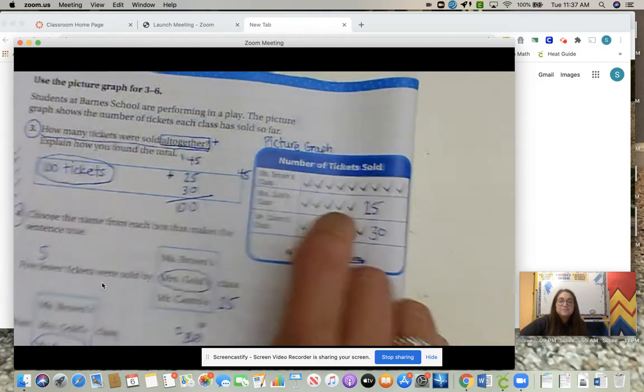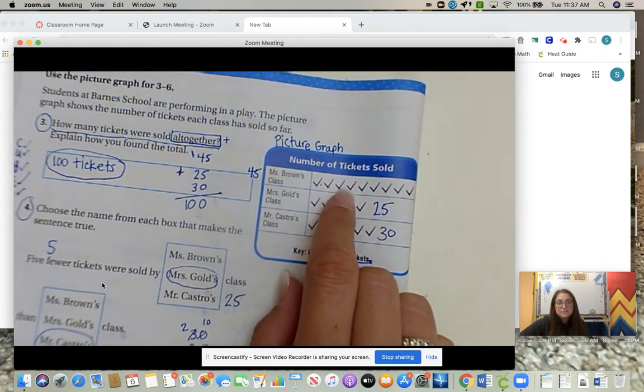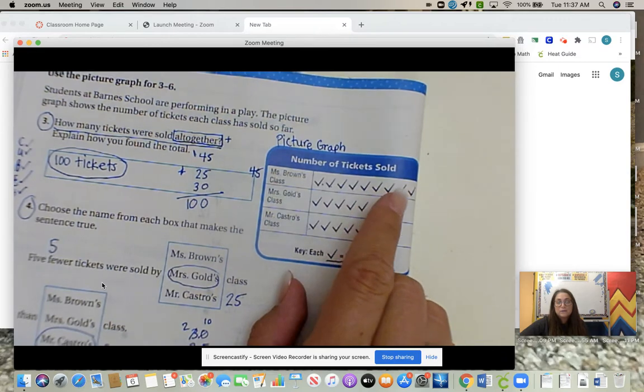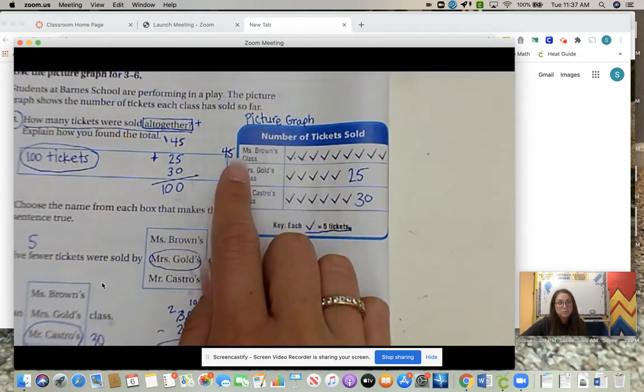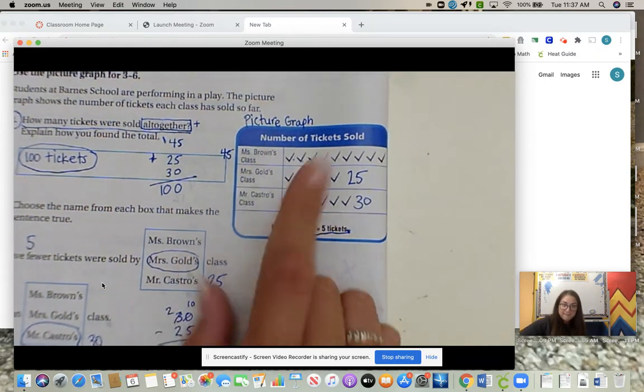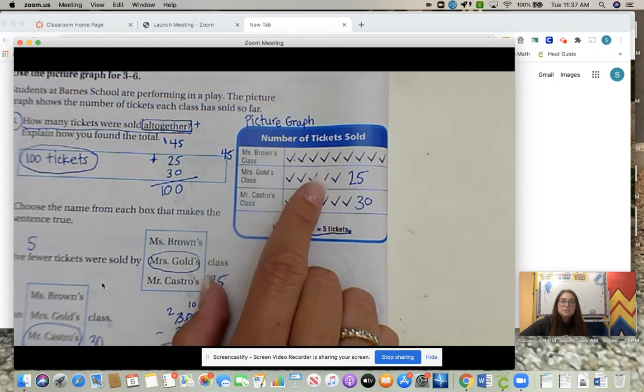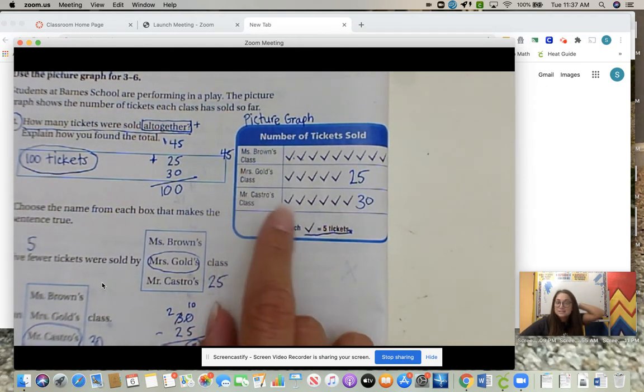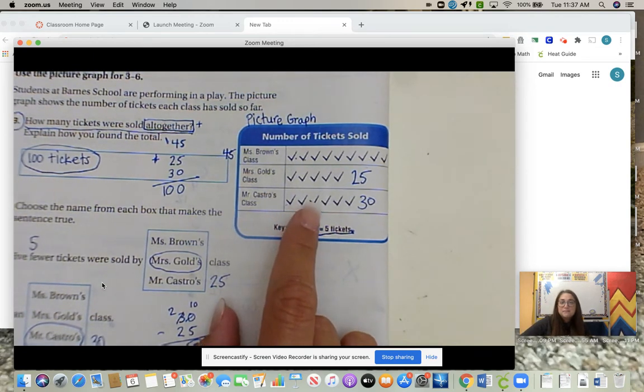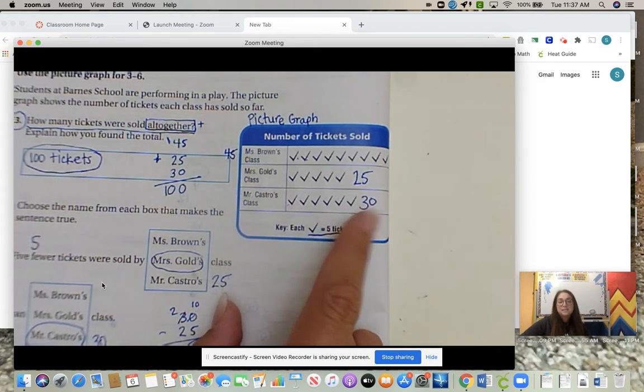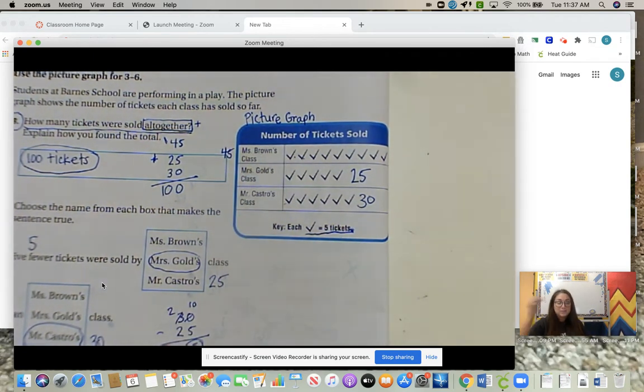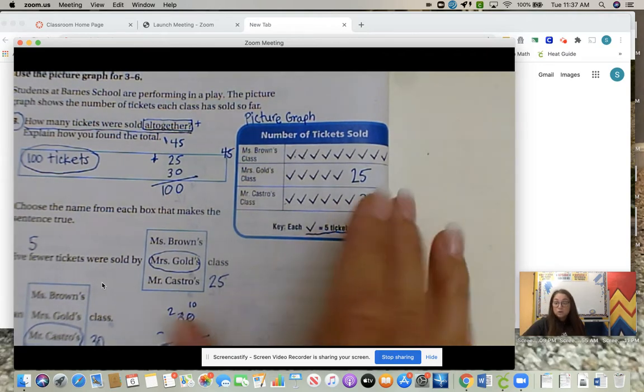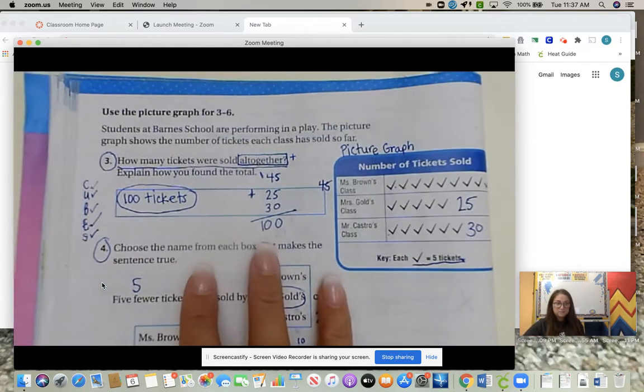So we want to skip count by fives: 5, 10, 15, 20, 25, 30, 35, 40, 45 tickets were sold by Ms. Brown's class. 5, 10, 15, 20, 25 tickets were sold by Mrs. Gold's class. And 5, 10, 15, 20, 25, 30 tickets were sold by Mr. Castro's class. Now the questions will go a lot smoother since we already have our numbers.